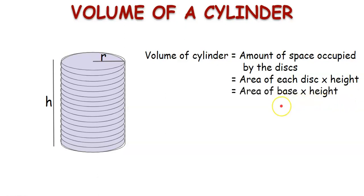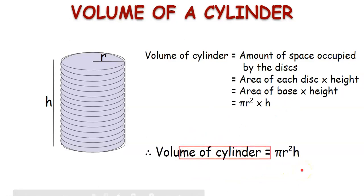As we know that the area of a circle is pi R square, therefore the volume of each disk would be pi R square times H. Therefore, the volume of the cylinder is given by pi R square H.